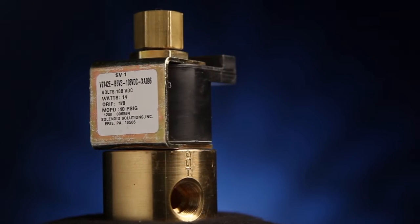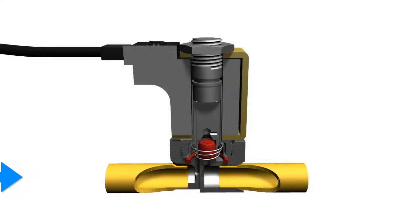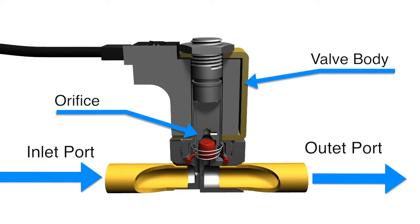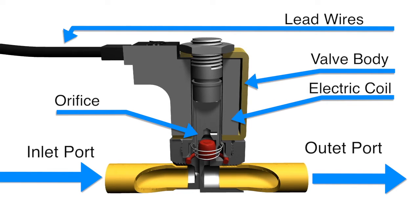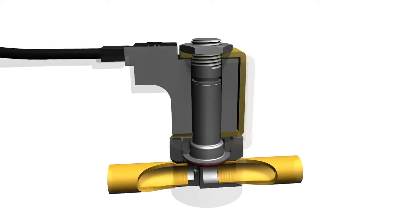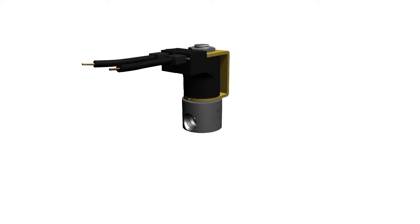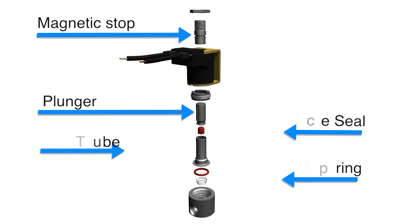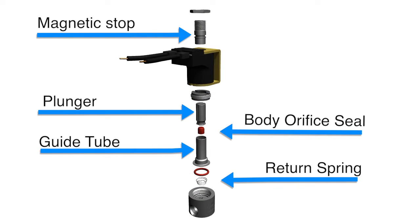Solenoid valves have a number of standard components: inlet and outlet ports, an orifice, an electric coil to create a magnetic field, magnetic stop, plunger and guide, seals, and spring.